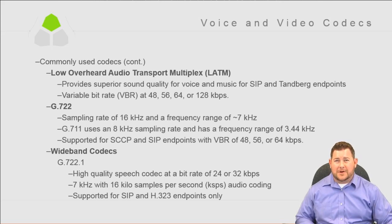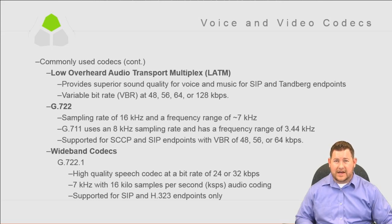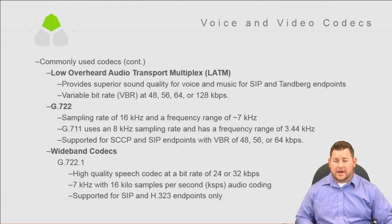For those in the music downloading world, the most commonly used format for MP3s is 128K. It's not necessarily the best quality — 320 is preferable. But 128 is really amazing for a voice codec; we're talking about very clear speech at that point if you're allowing the bit rate to go that high.